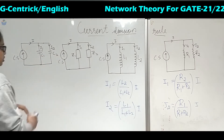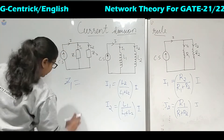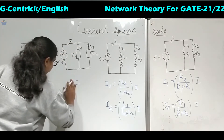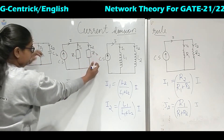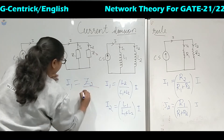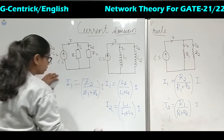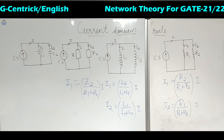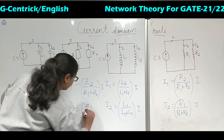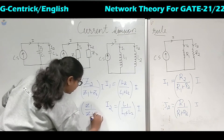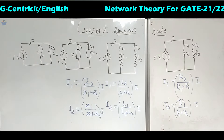Coming to impedance, it also has the same rule. I1 — if you have to calculate the value of I1 — take the impedance of the opposite branch, that is Z2, upon summation of Z1 plus Z2, multiplied with total current in the circuit. For calculating the value of I2: take the opposite impedance Z1 of the other branch, then summation of Z1 plus Z2, then multiply it with total current.